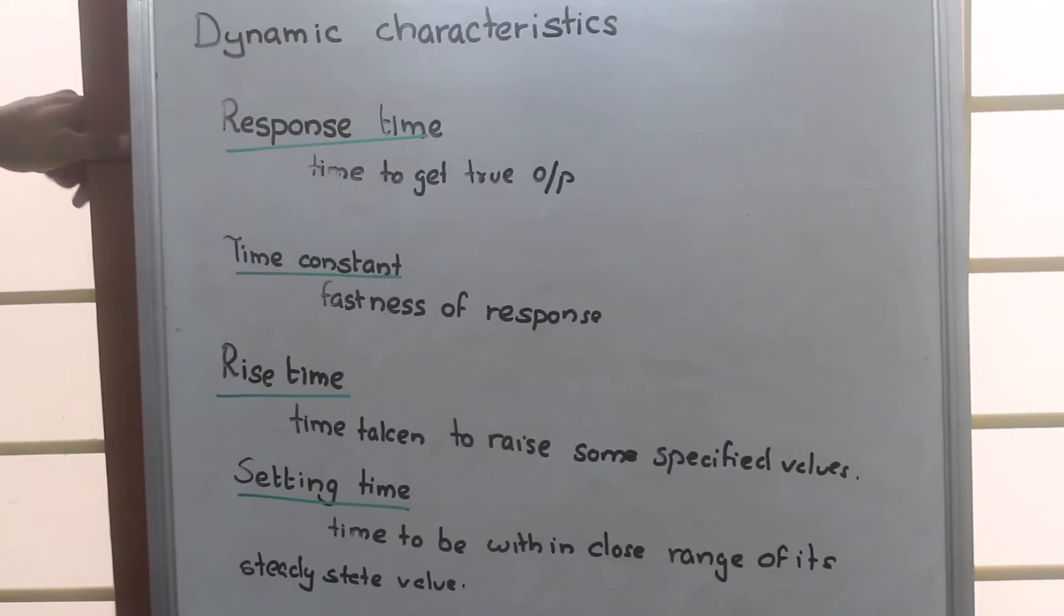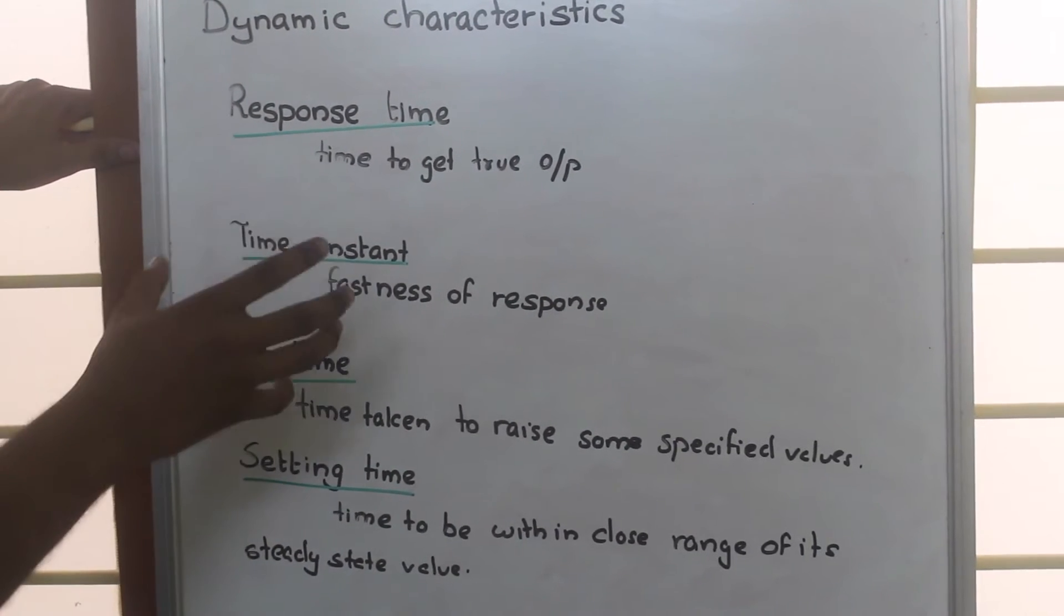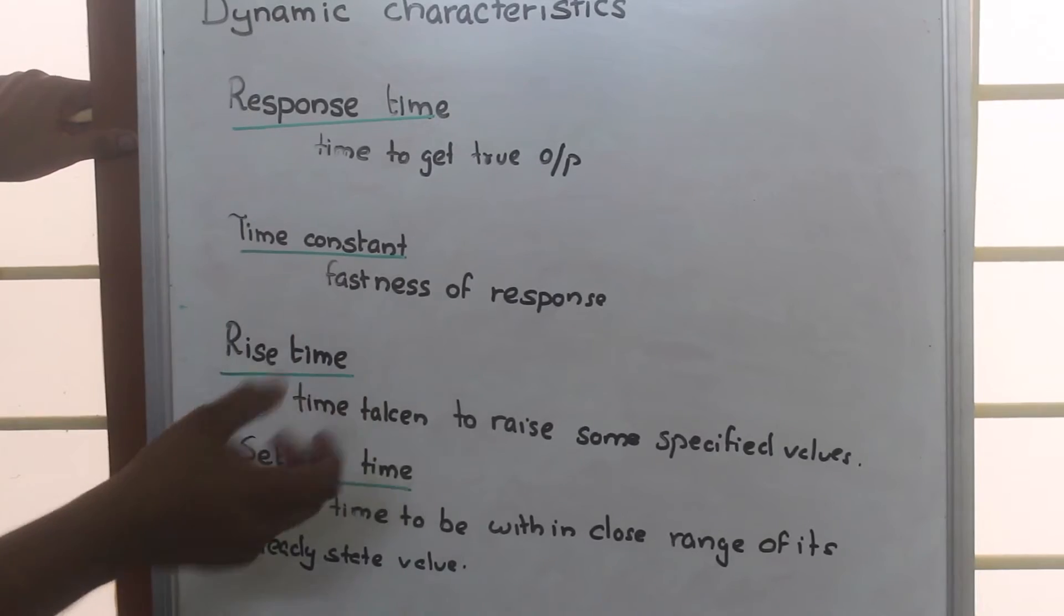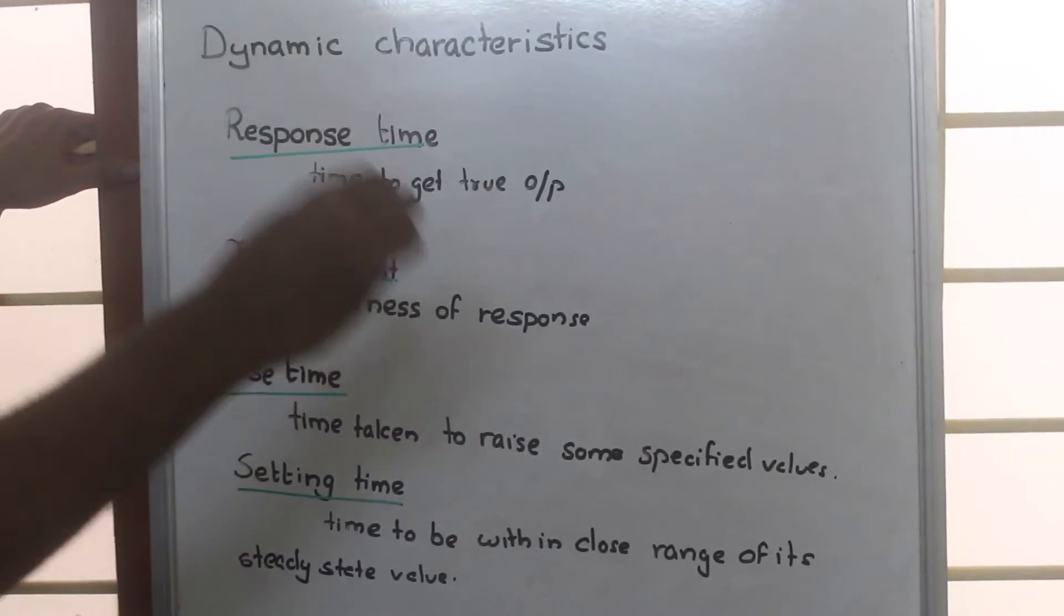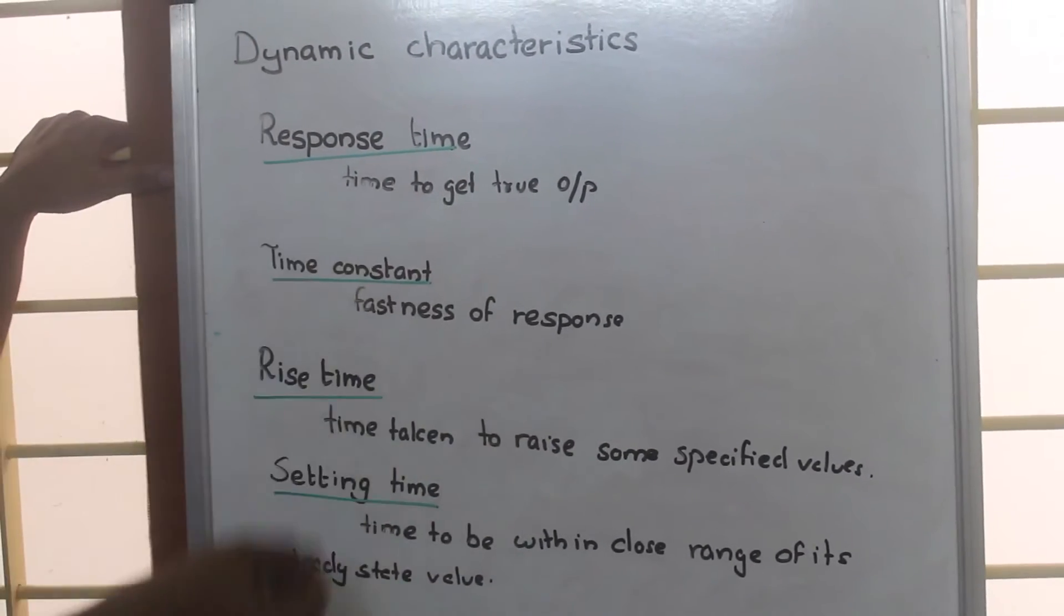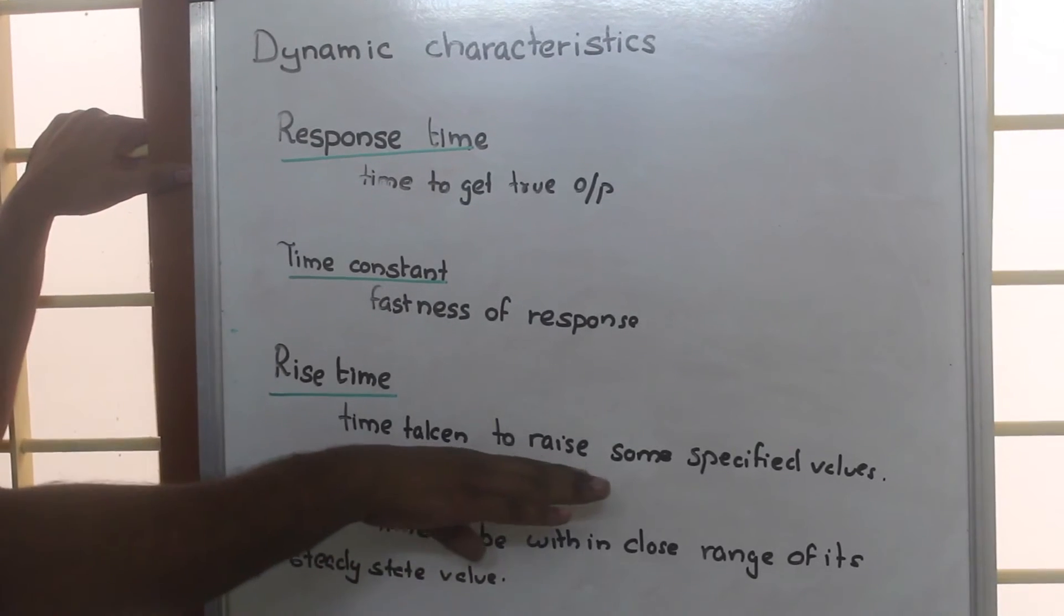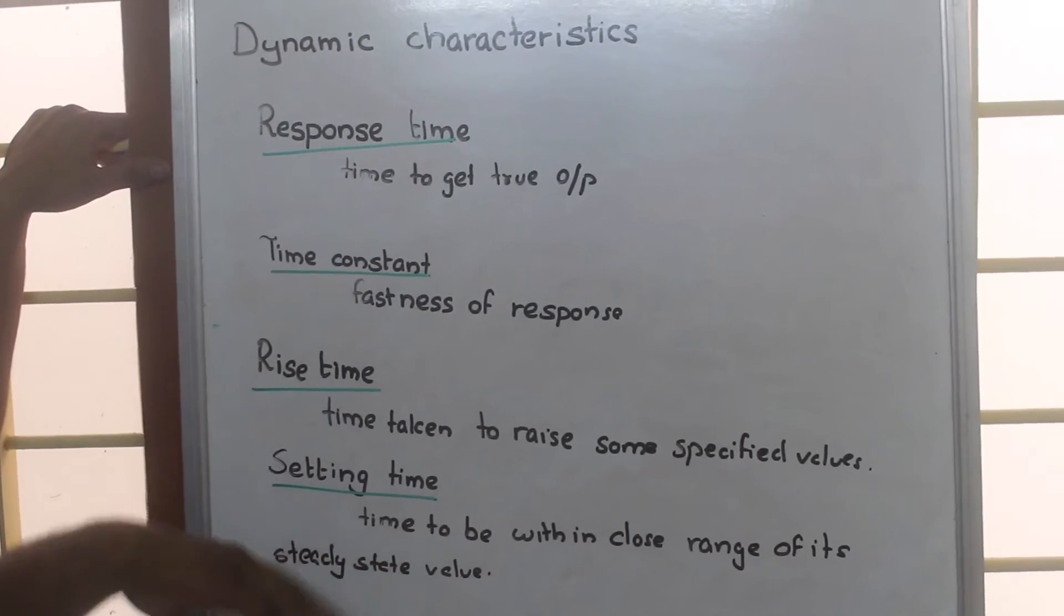Rise time means suppose our sensor is showing some output and we need a certain percentage of this output value, say 60 percent, for making some inference. The time taken to reach some specific value is called rise time.